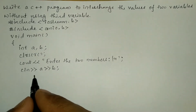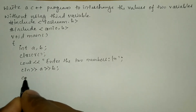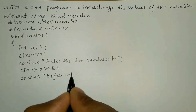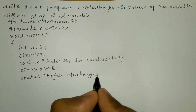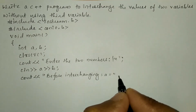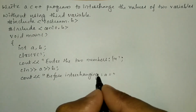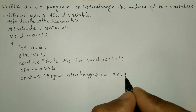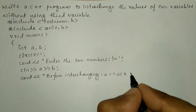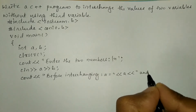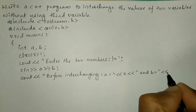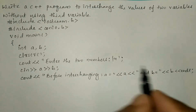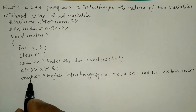After receiving the values of both variables a and b, they will be printed. I will use cout with stream insertion operator and write in double quotes 'before interchanging a is equal to', then stream insertion operator a, then 'and b is equal to', then stream insertion operator b, then endl. Endl performs the same operation as backslash n, bringing the cursor to the next line.